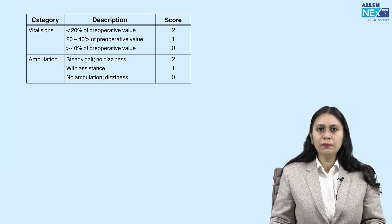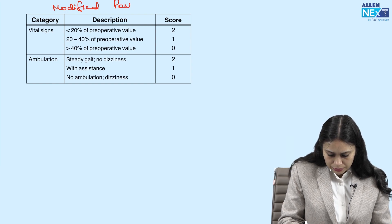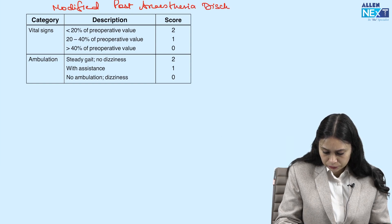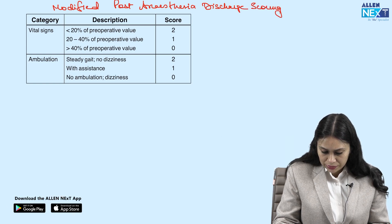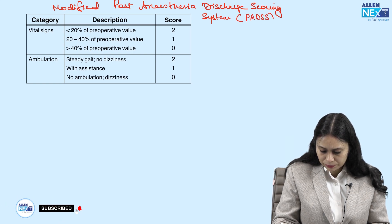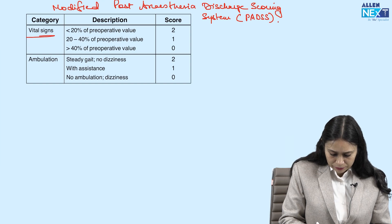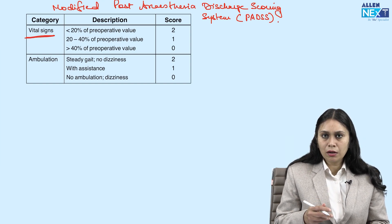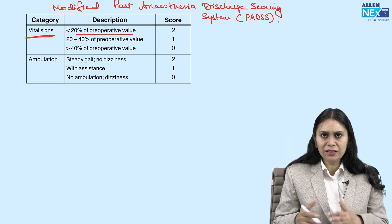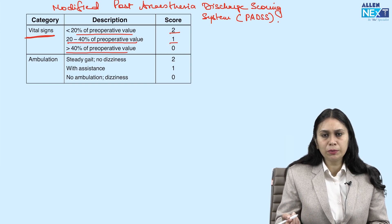The next scoring system is the Modified Post-Anesthesia Discharge Scoring System, called PADS. This also has five criteria. The first is vital signs: if all vital signs are within less than 20% of the pre-op value, the score is 2. If the difference is 20 to 40% of the pre-op value, it is 1. If more than 40% of the pre-op value, it is 0.